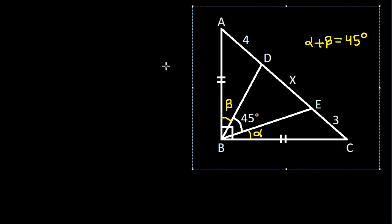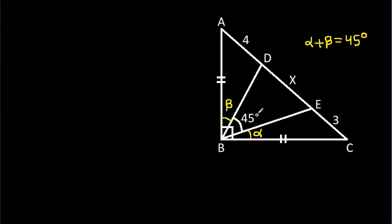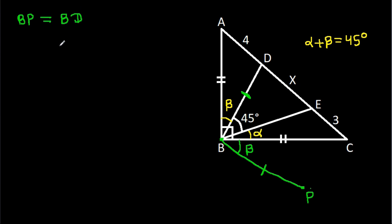Now, from point B, if we make a line at an angle of beta, and suppose this point is P, such that BP is equal to BD, and angle CBP is equal to angle ABD, that is beta. This is our construction.